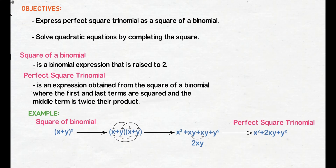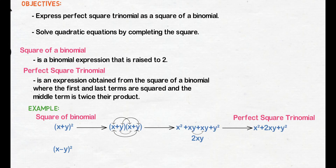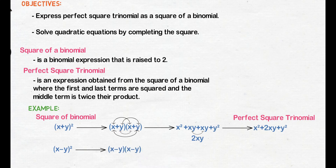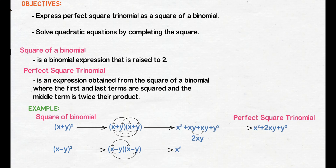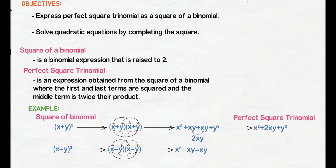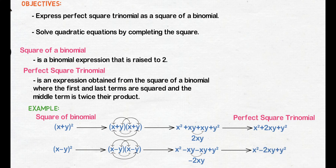Another example is quantity x minus y square. I-rewrite natin ito as the product of x minus y and x minus y. Perform natin ang FOIL method. X times x is x square. X times negative y is negative xy. Negative y times x is negative xy. And negative y times negative y is y square. Combine similar terms negative xy and negative xy, we get negative 2xy. So we have x square minus 2xy plus y square.